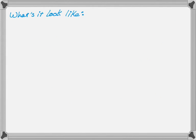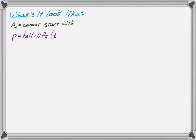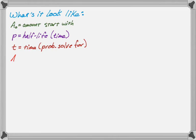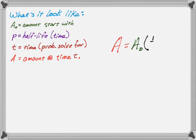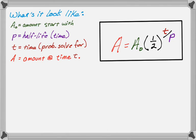Let's take a look at what the equation will look like. A sub-zero is the amount you start with — the problem will tell you that. P is the half-life, in some unit of time like years, days, or months. T is time, and you often solve for time — that's when you'll need logs. A is the amount at time t, which is the other thing you solve for. The equation is: A equals A sub-zero times one-half raised to the power of t over p.